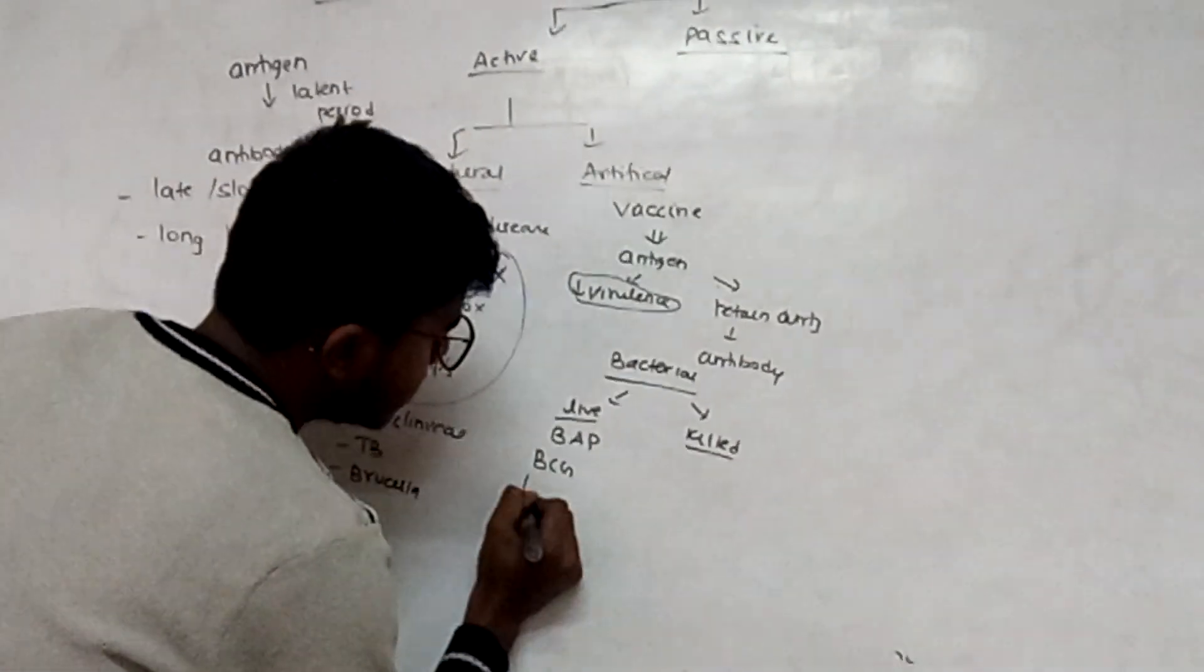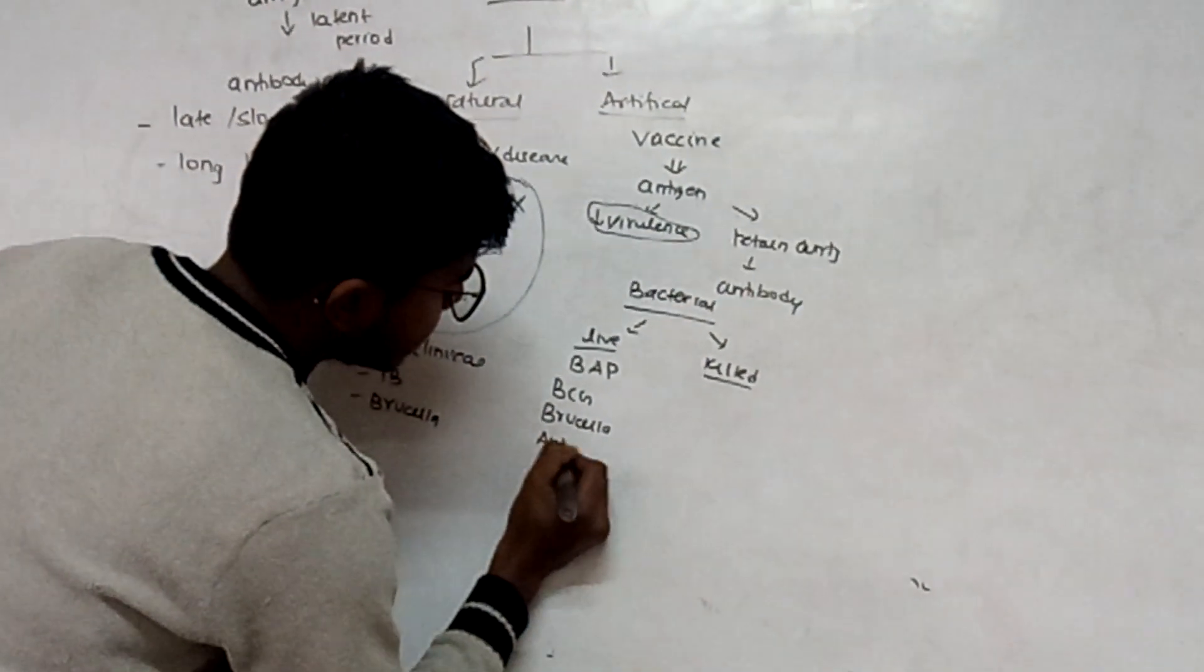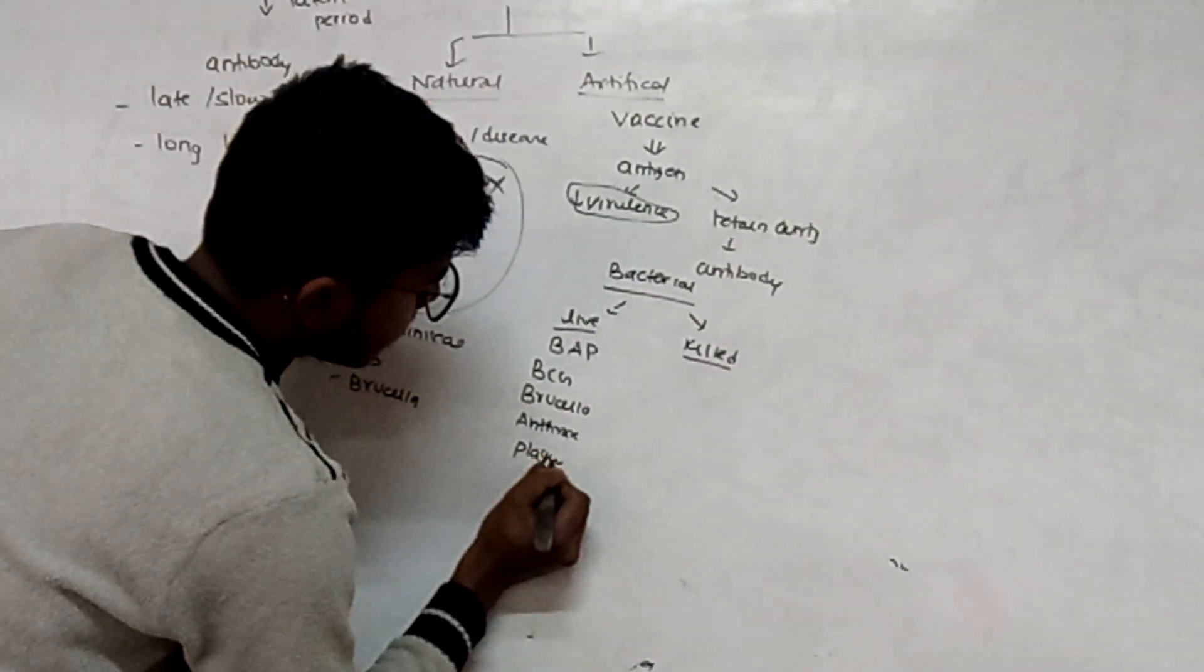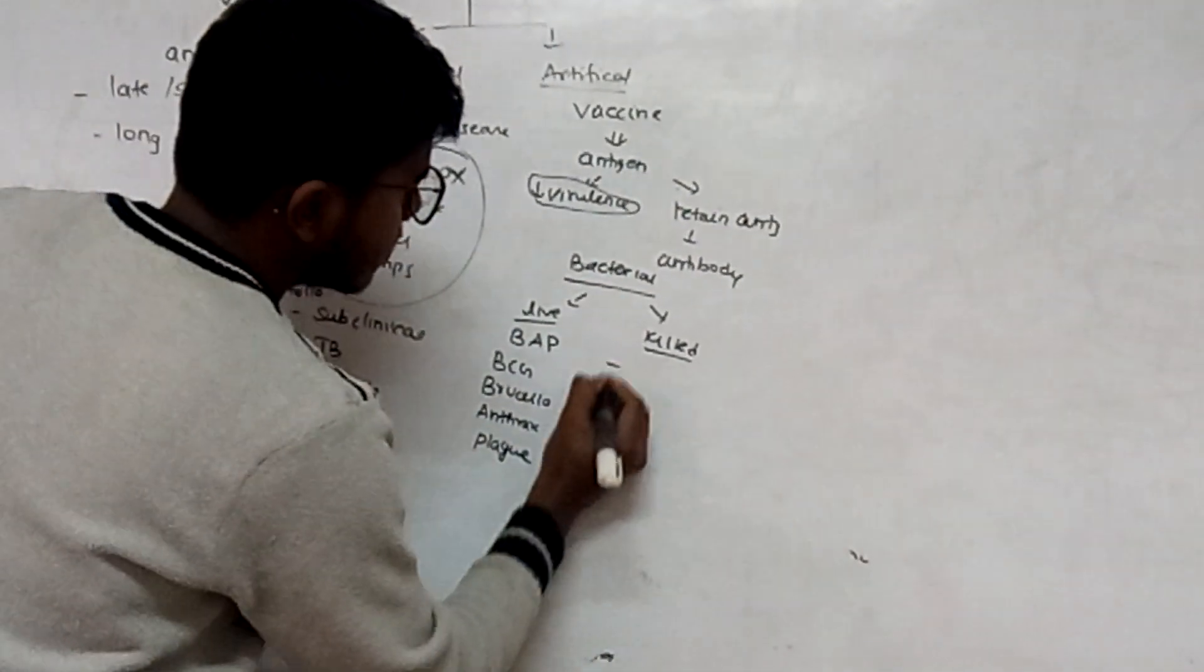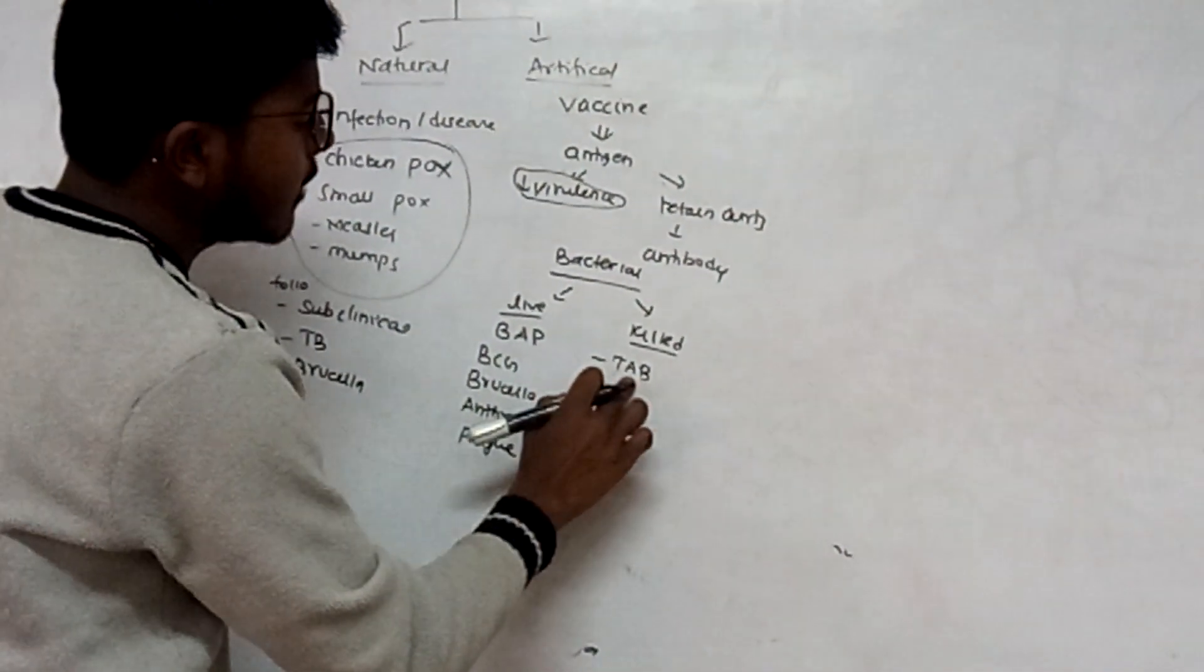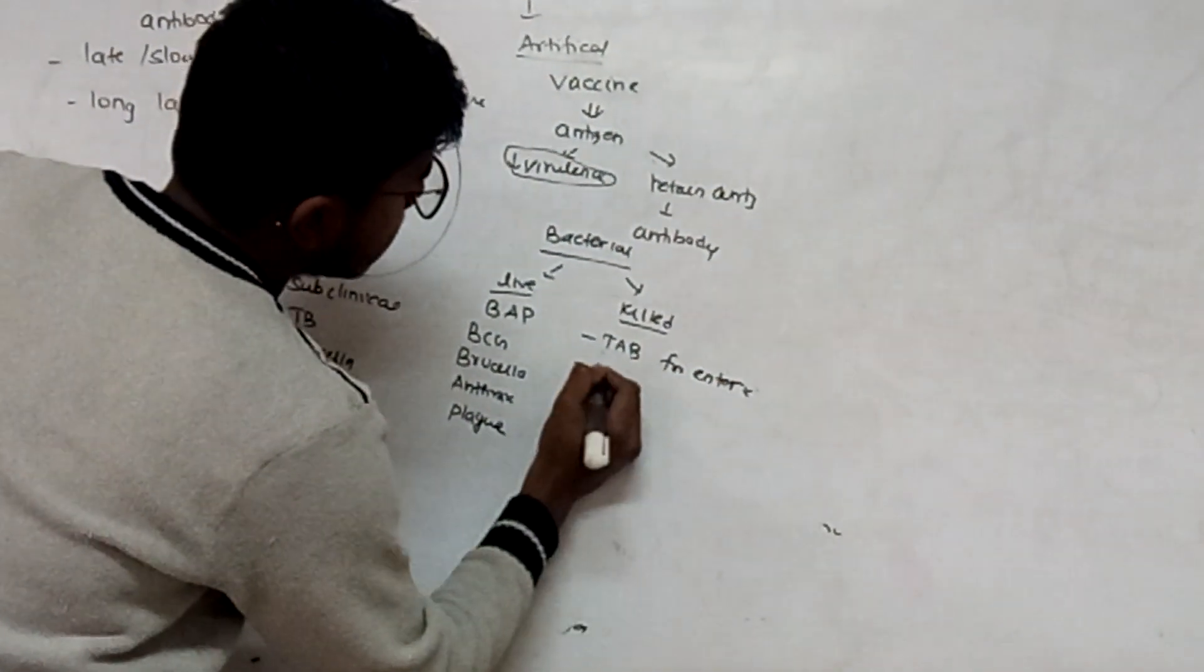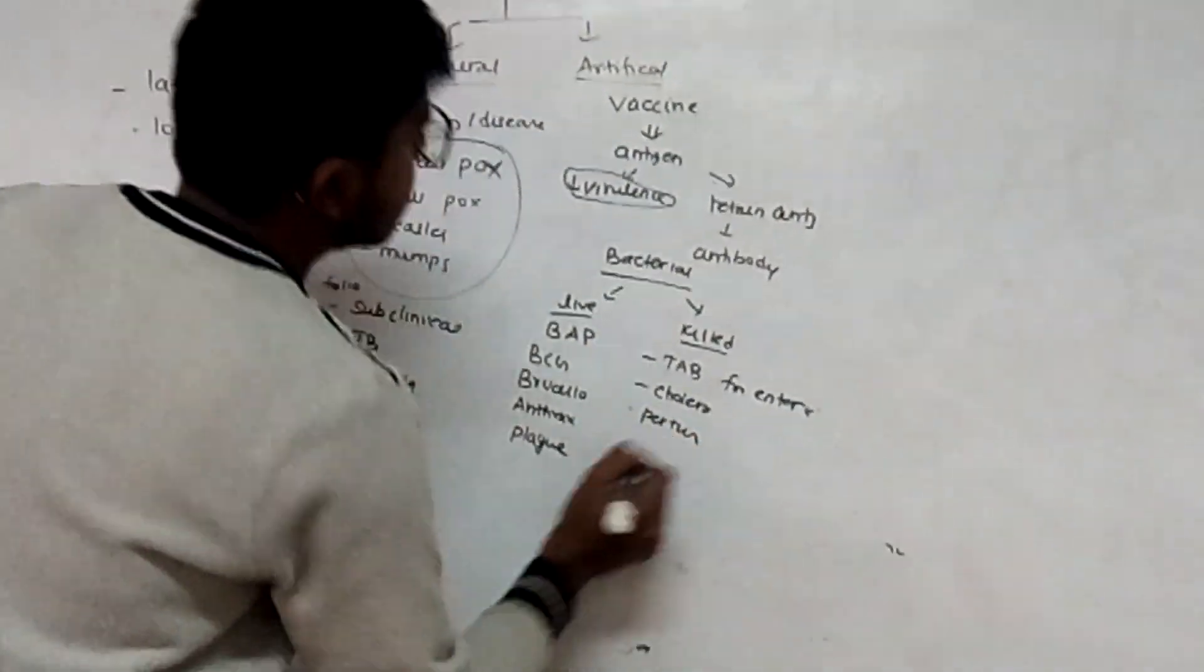Killed vaccines are TAB - that is typhoid, paratyphoid A and B for enteric fever, cholera, and pertussis.